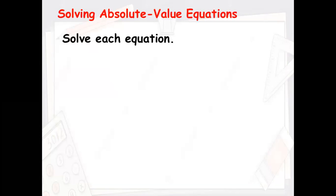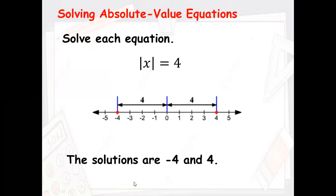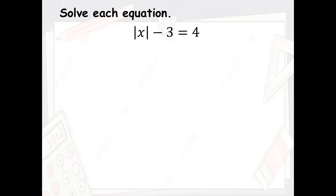The next step: rewrite the equation giving two possibilities — one with a positive sign and one with the negative sign. Finally, solve the two equations as you would normally solve a regular equation. So the first example: what can be the value of x when the absolute value of x equals four? That means four units from zero, so the solutions are positive four and negative four.